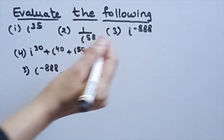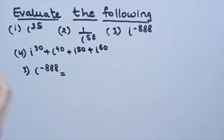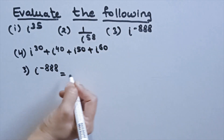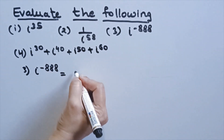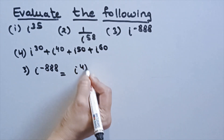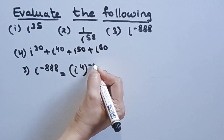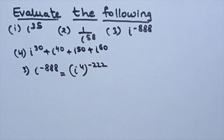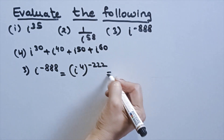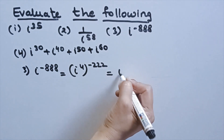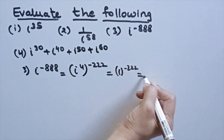Third: i⁻⁸⁸⁸. Write this as (i⁴)⁻²²², which equals 1⁻²²² = 1.